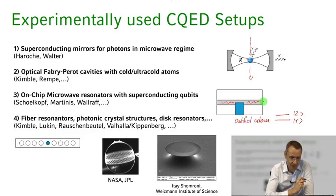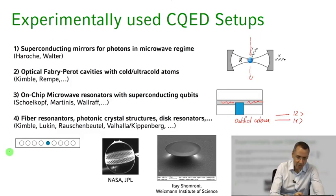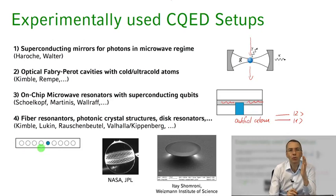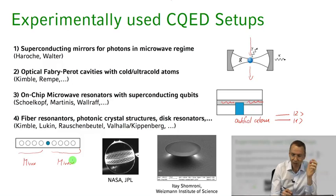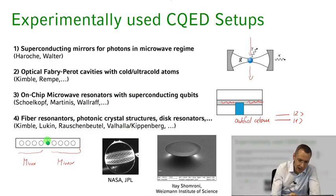You can also have photonic crystal structures, where you take a piece of glass and introduce periodic holes into it. These periodic holes form a Bragg mirror — light is Bragg-reflected when it satisfies the Bragg condition from these hole structures. Two arrays of holes thus form two mirrors, and you can place your real or artificial atom in between to couple it to the light field bouncing back and forth between those two Bragg reflectors.